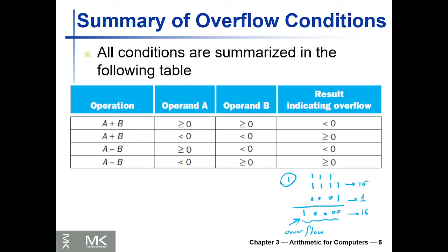A computer with a 4-bit width will show only zero for this result, which is incorrect — so the programmer must be careful. Let's look at when overflow might occur in arithmetic operations. For addition where both inputs are positive signed numbers, we can detect overflow by examining the most significant bit.